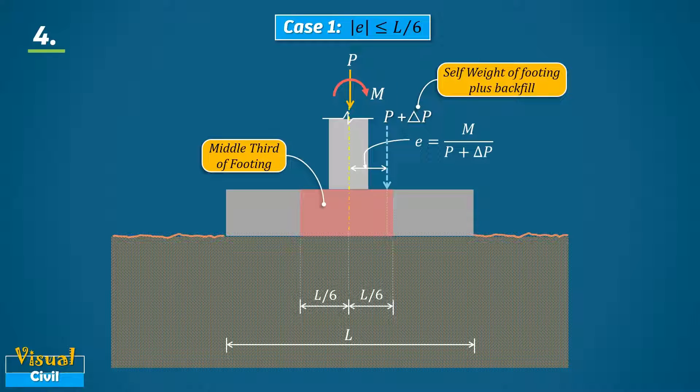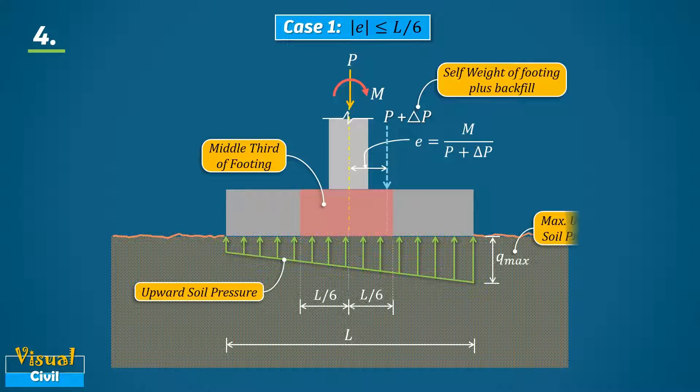If this eccentricity lies within the middle third of the footing, meaning the value of eccentricity e is less than or equal to L by 6, then the entire contact area of the footing will be subjected to a linearly varying non-uniform upward soil pressure.